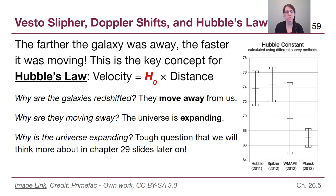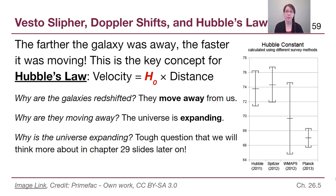Why are all of those galaxies redshifted? We're measuring a Doppler redshift in their spectrum because they are moving away from us — we can answer that using our chapter 5 understanding of Doppler shift. The reason they are moving away from us is that the universe itself is expanding: everything is moving away from everything else because space itself is getting larger. The question of why the universe is expanding is more difficult and will be discussed in chapter 29.